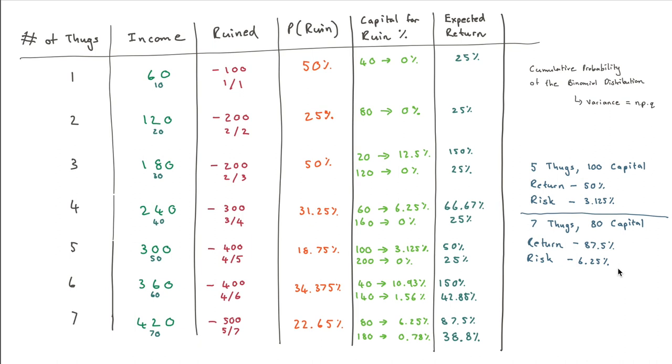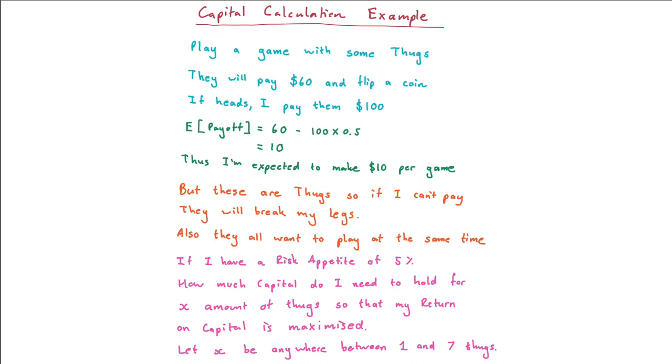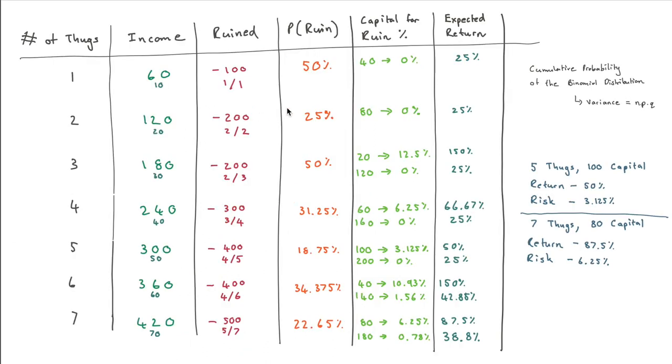And what I wanted to basically just show with this video is, when we have a very, very simple situation, which is literally, we've got some thugs, and we're flipping coins, they're paying us, and we're then paying them if it's a heads, we can see how complicated this whole capital calculation can become. I mean, once we've done all the maths, it's still not straightforward on what exactly we should do. Like I said, do we play against 5 thugs or 7 thugs? You know, do we hold 100 capital? Do we hold 80 capital? You know, these are things that the board of directors will then sit around and have to have a vote, or have to have a discussion to determine the optimal strategy of the business. But you can now imagine that when we stop going from just flipping coins to investing in sophisticated structured products on public financial markets, and you start going into crazy derivatives and arbitrage and all these other weird and wonderful things, you can see how capital modeling can become very, very confusing and very, very tricky.